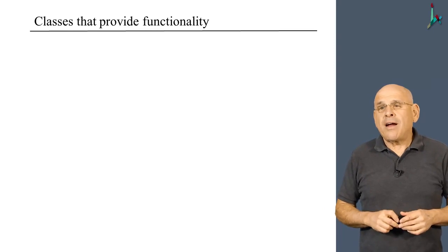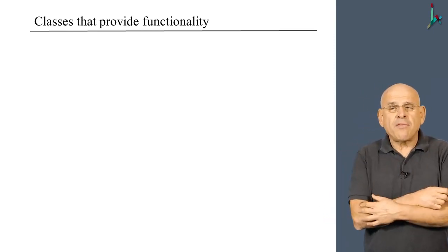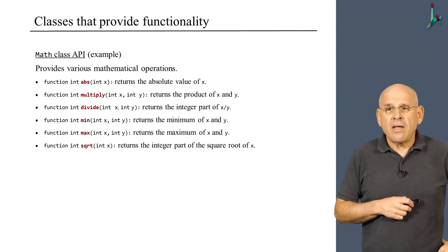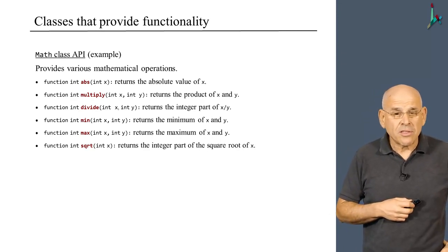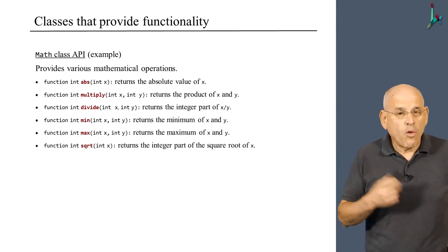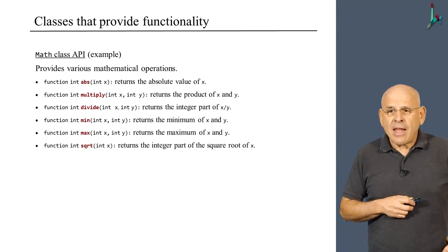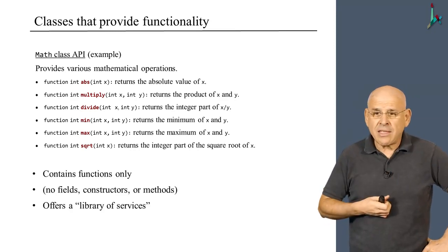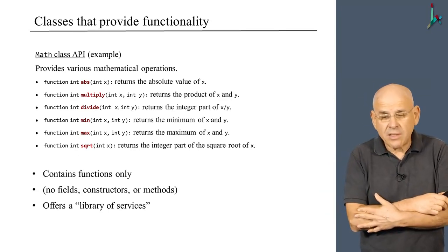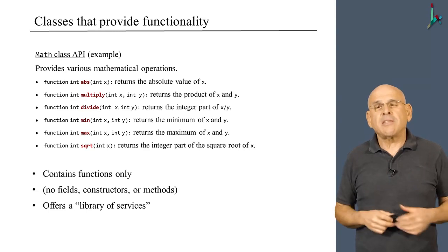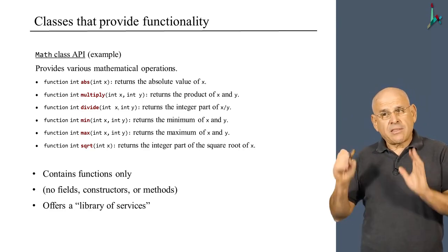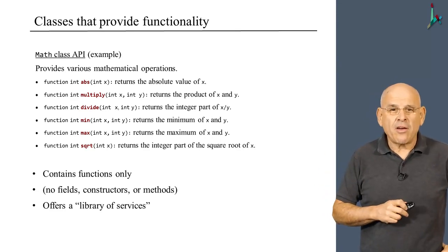There are classes that provide functionality. A good example of these classes is our OS math class, which as you see, you see the API here, is just a library of commonly used mathematical functions. Anyone can use these functions at will, and the library provides the implementation, hopefully an efficient implementation of these functions. What is special about these kinds of classes is that they contain functions only. There are no fields, no constructors, no methods, and obviously there are no objects. This class and similar classes are essentially libraries of modules containing functions.